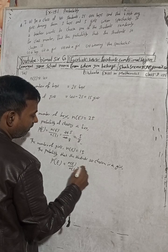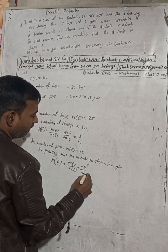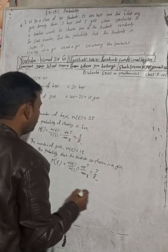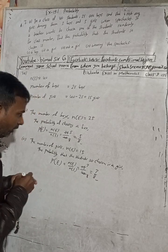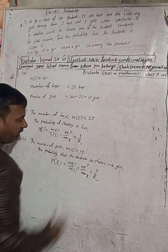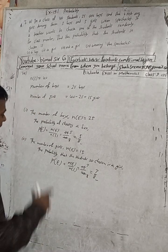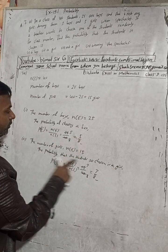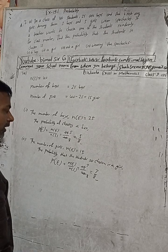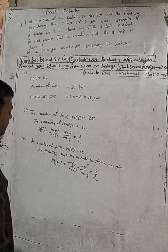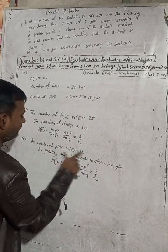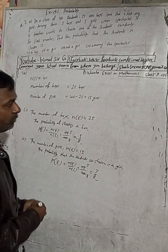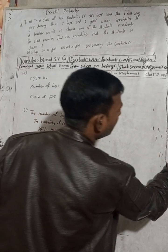15 divided by 40 can be simplified by dividing by 5, giving 3/8. So the probability of choosing a girl is 3/8. The answer in the book is 3/8 — correct.